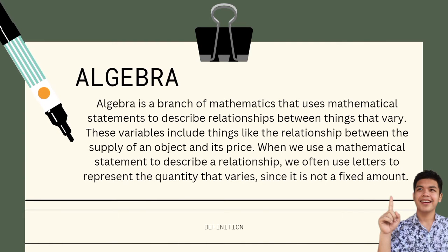Let's define algebra. Algebra is a branch of mathematics that uses mathematical statements to describe relationships between things that vary. These variables include things like the relationship between the supply of an object and its price. When we use a mathematical statement to describe a relationship, we often use letters to represent the quantity that varies, since it is not a fixed amount.